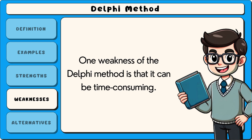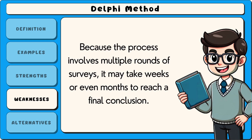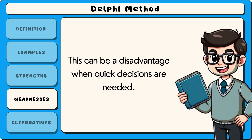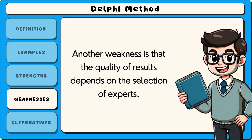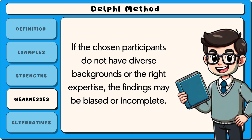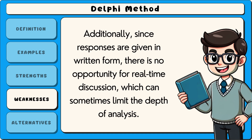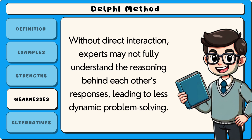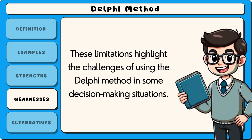One weakness of the Delphi method is that it can be time-consuming. Because the process involves multiple rounds of surveys, it may take weeks or even months to reach a final conclusion, which can be a disadvantage when quick decisions are needed. Another weakness is that the quality of results depends on the selection of experts; if the chosen participants do not have diverse backgrounds or the right expertise, the findings may be biased or incomplete. Additionally, since responses are given in written form, there is no opportunity for real-time discussion, which can limit the depth of analysis. Without direct interaction, experts may not fully understand the reasoning behind each other's responses, leading to less dynamic problem solving. These limitations highlight the challenges of using the Delphi method in some decision-making situations.